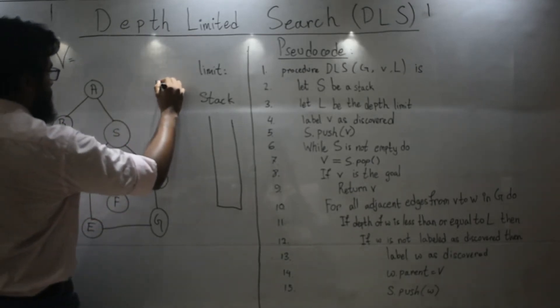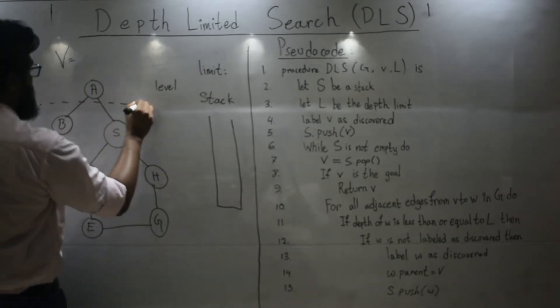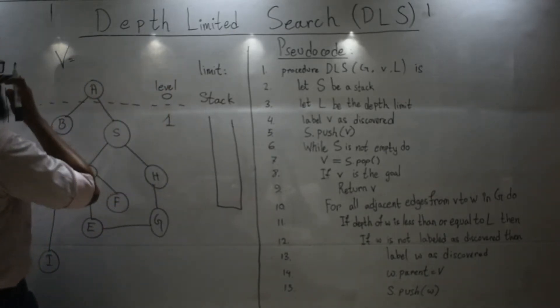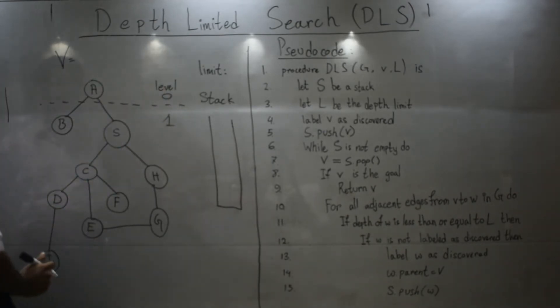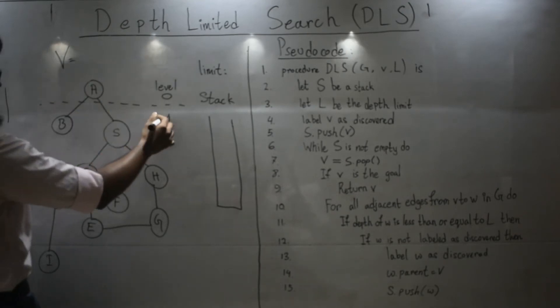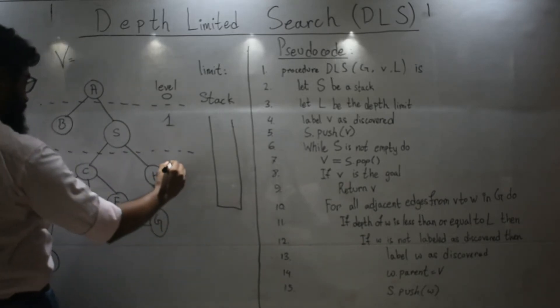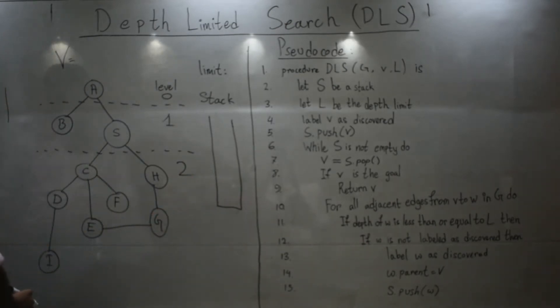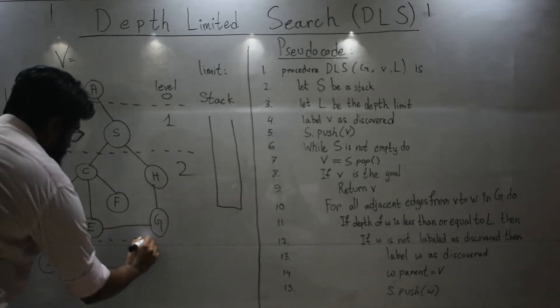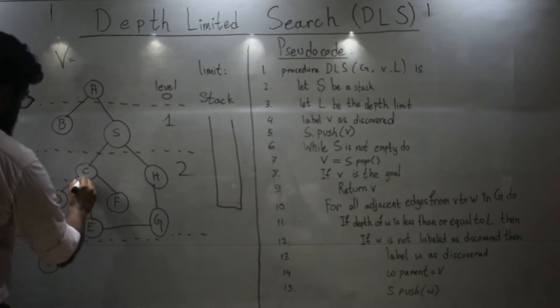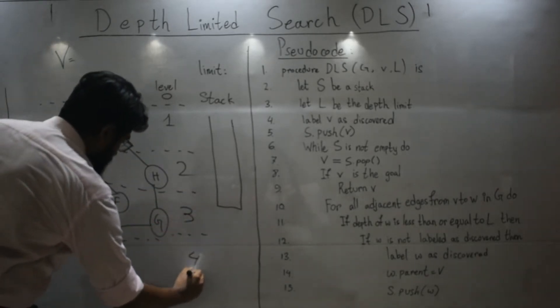Now, let's give them levels. So, A is my root node. We will give it level 0. The immediate children of A will get a level of 1. Then, their children will get a level of 2. And then, the next ones will get a level of 3. These are 3.